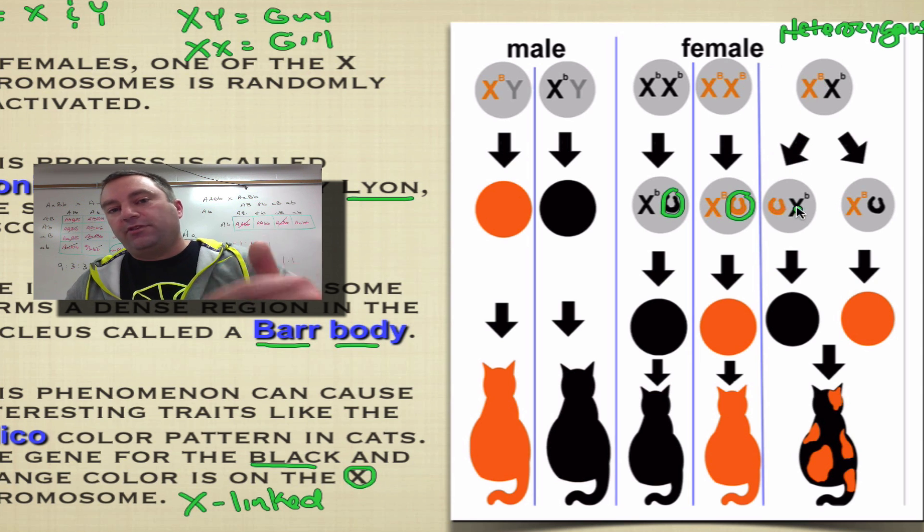What we see here is sometimes the X chromosome that carries the orange allele is inactivated. So those cells will express the black fur, and that's going to lead to the black fur here on this kitty. In other cells, the X chromosome containing the black allele will be inactivated, which means it's going to express the orange color.